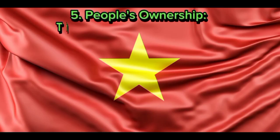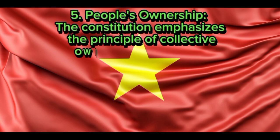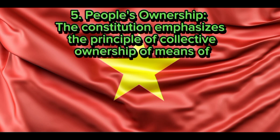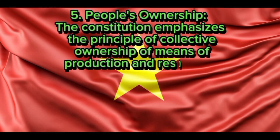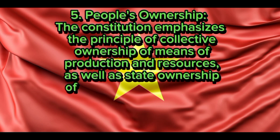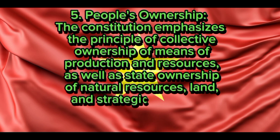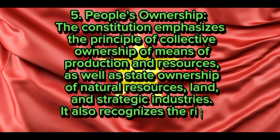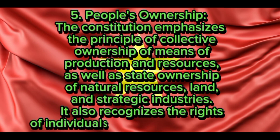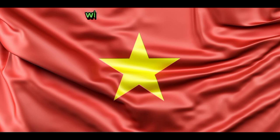People's ownership: The Constitution emphasizes the principle of collective ownership of means of production and resources, as well as state ownership of natural resources, land, and strategic industries. It also recognizes the rights of individuals to own private property within the limits defined by law.